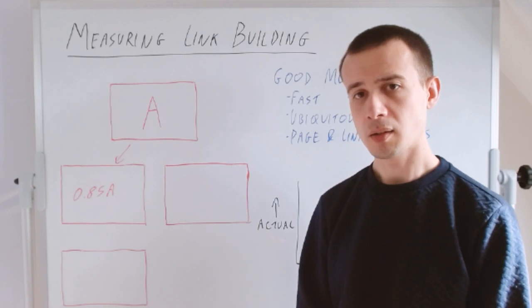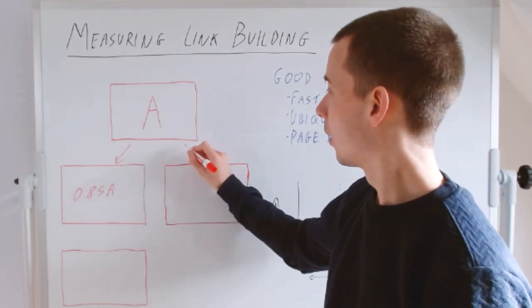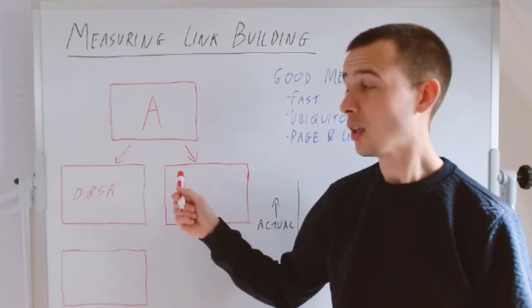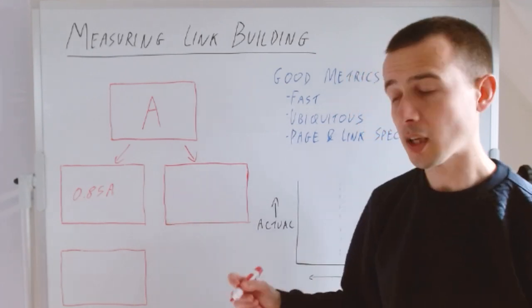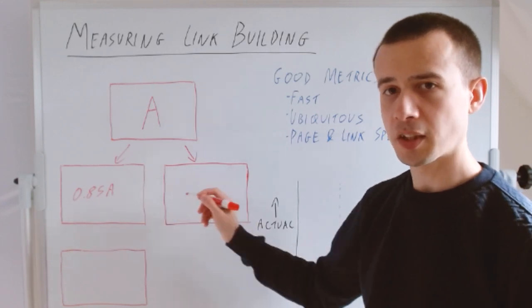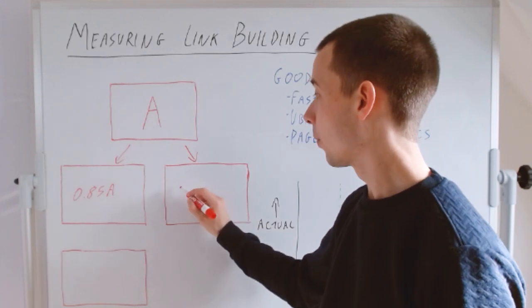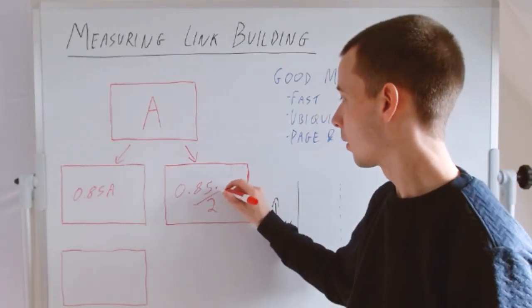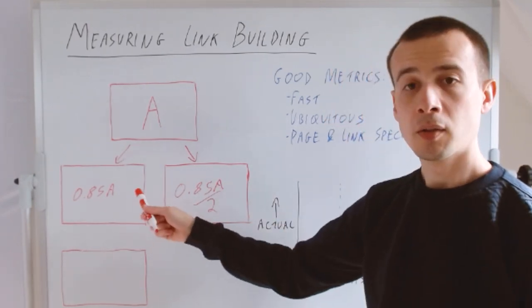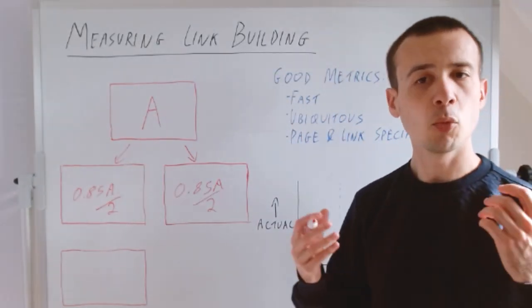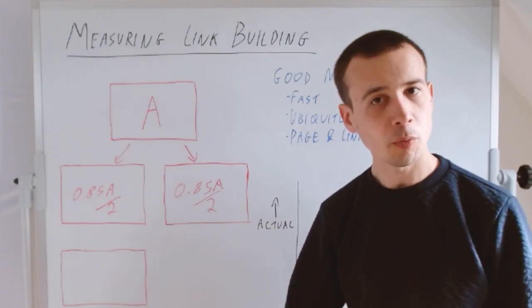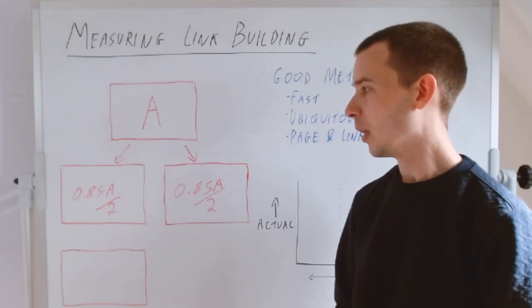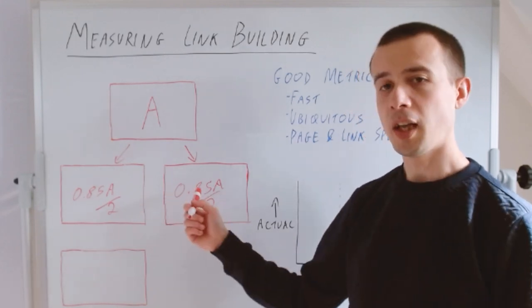What if we had a second link and introduced a third page to the internet? We've got an internet with three pages and two links, and the links only go in one direction. This is very simple. In this case, we can't have both of these pages getting the full probability—the users aren't clicking through to both, they're clicking through to one of them. So that gets half of 0.85A, and this one does too.